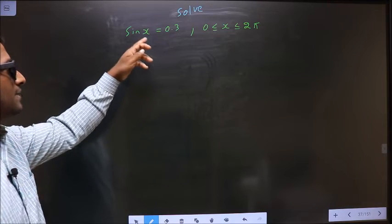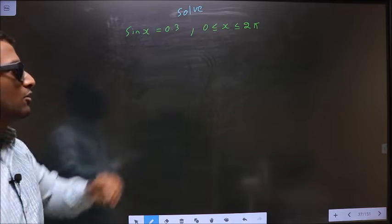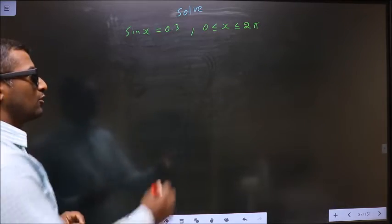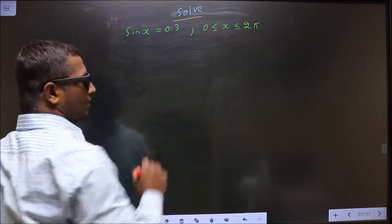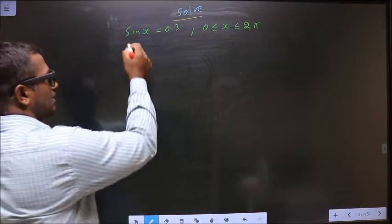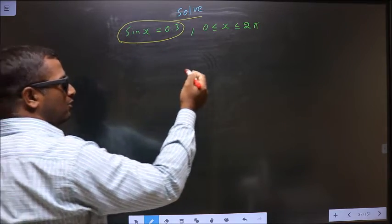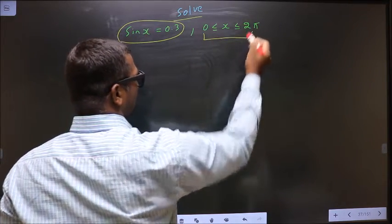Solve sin x = 0.3 where x lies between 0 and 2π. They told you to solve, so you need to find the values for x satisfying this equation, and it should lie between 0 and 2π.